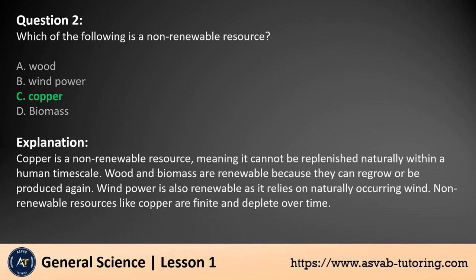The answer is c. Copper is a non-renewable resource, meaning it cannot be replenished naturally within a human timescale. Wood and biomass are renewable because they can regrow or be produced again. Wind power is also renewable as it relies on naturally occurring wind. Non-renewable resources like copper are finite and deplete over time.